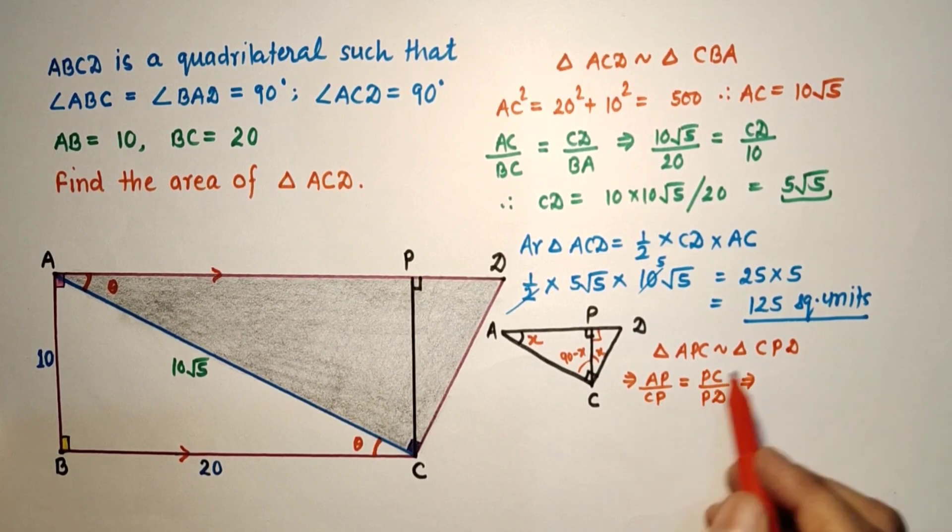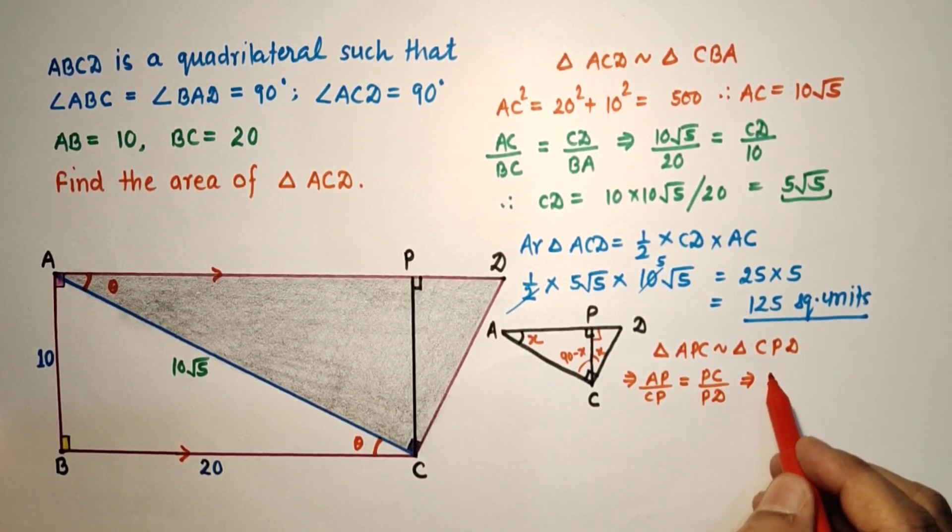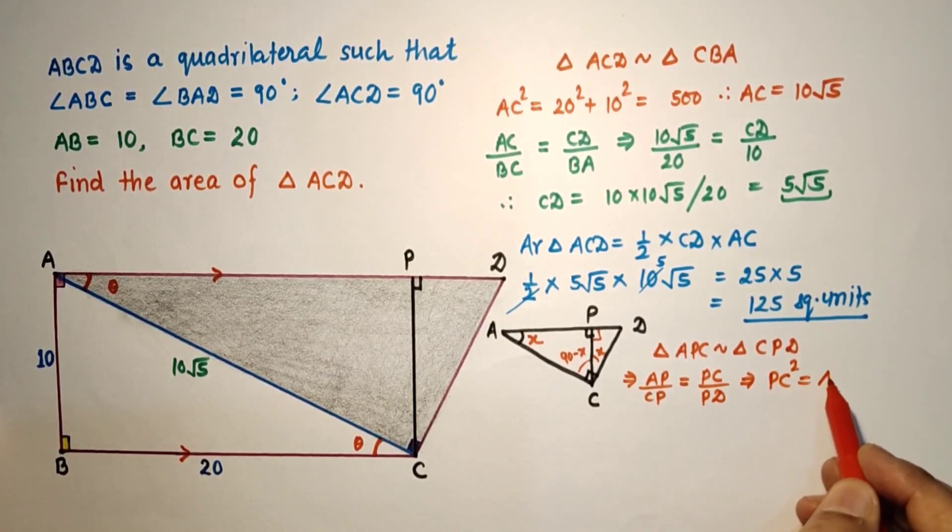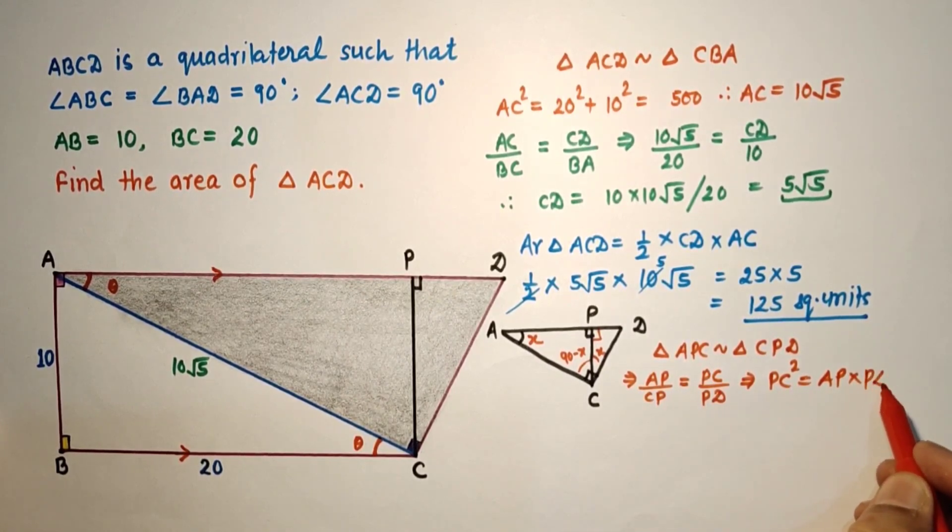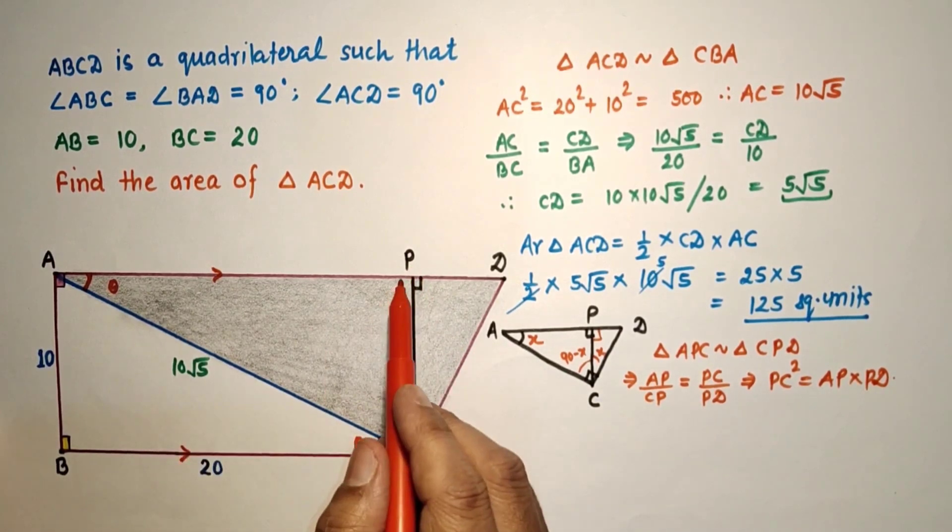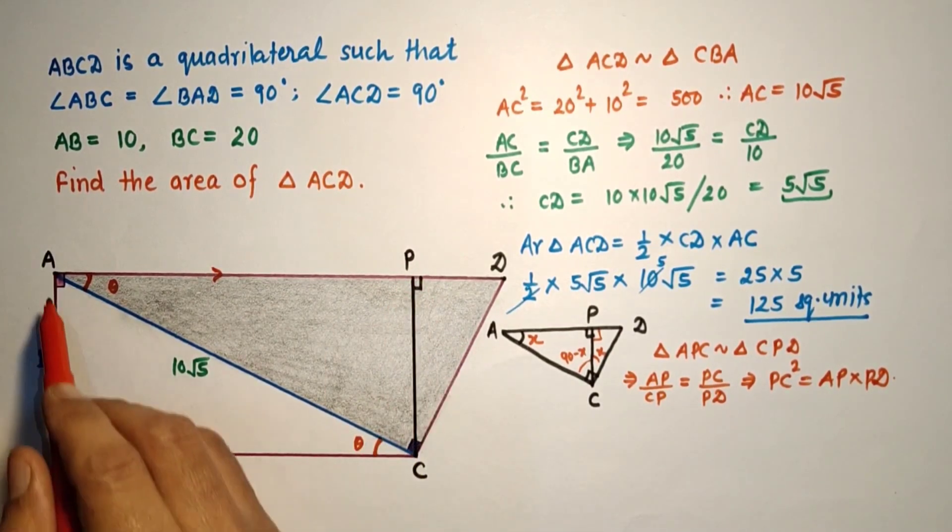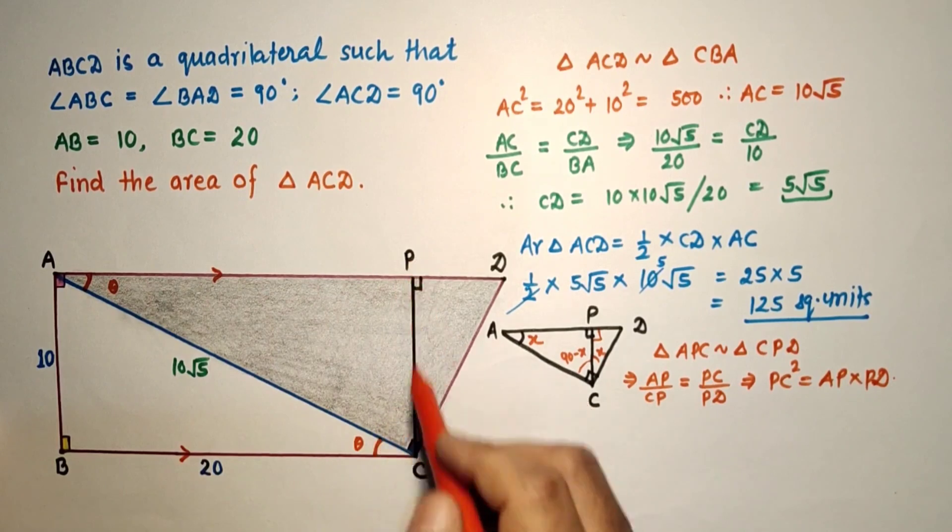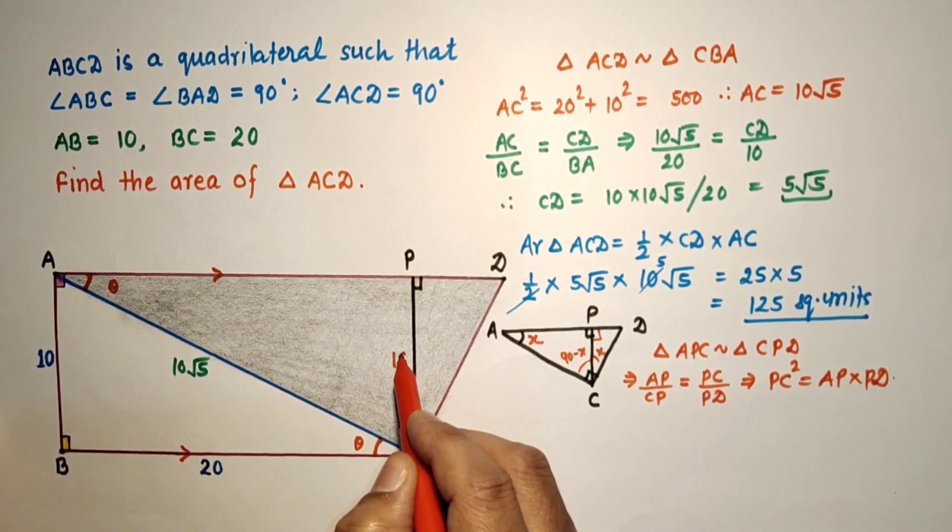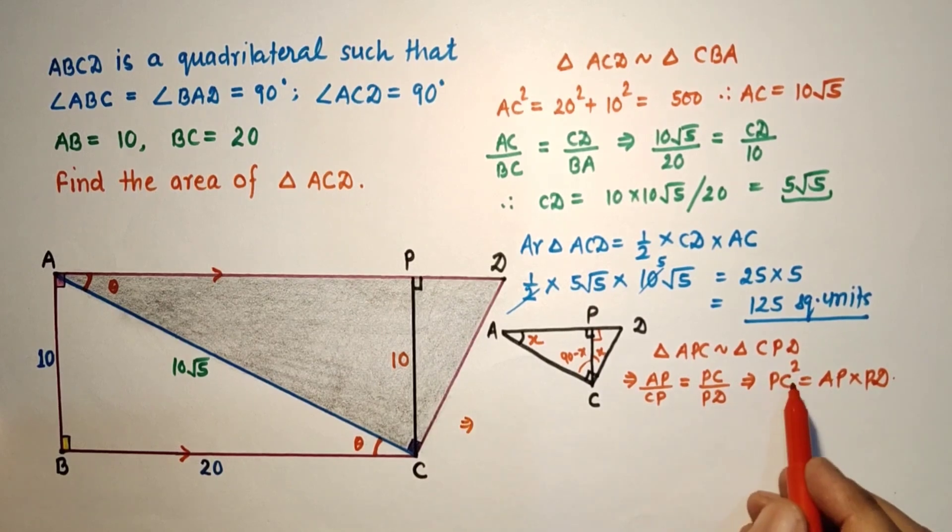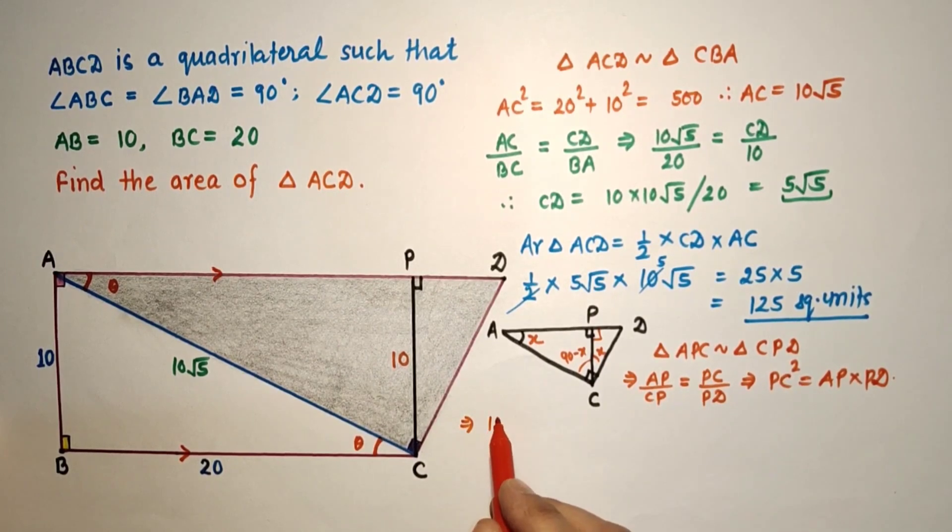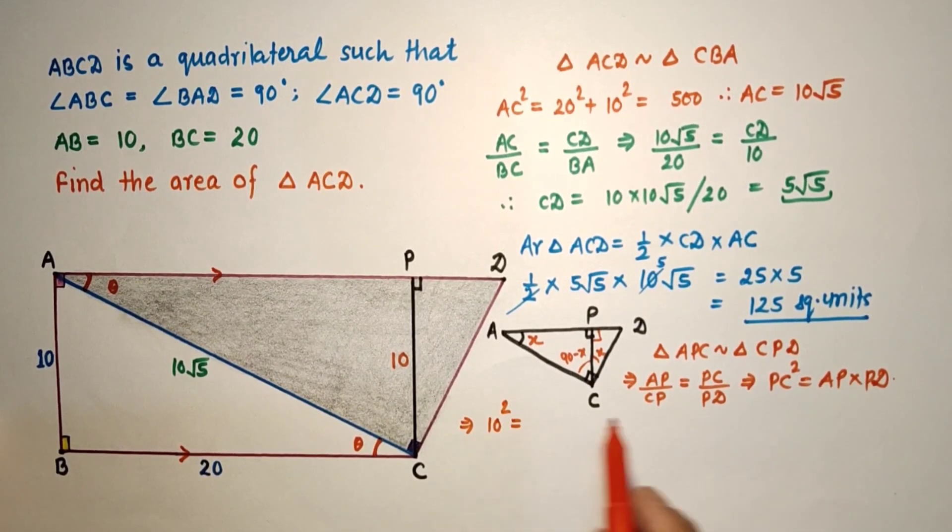If we simplify it, PC squared equals AP times PD. And PC we know, this is 90, this is 90, this is 90, 90. This is a rectangle, so this PC length is 10 only. So we can say that PC squared is 10 squared. AP, this AP is the same as BC because this is a rectangle. Opposite sides of a rectangle, AP is 20.